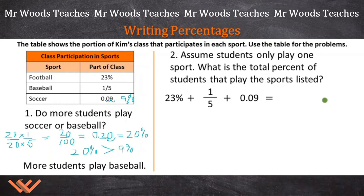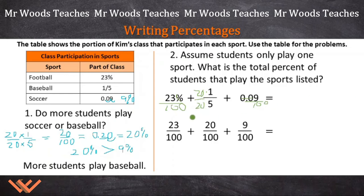What I would suggest is that we convert everything into a fraction based on 100. If we take the percent sign away and put a 100 under it, that gives us 23 hundredths. 0.09 is nine hundredths, so that becomes nine over 100. And for one fifth, we multiply the top and bottom by 20: 20 times one is 20, and 20 times five is 100, so that's 20 hundredths. Now we have 23 hundredths, 20 hundredths, and 9 hundredths.